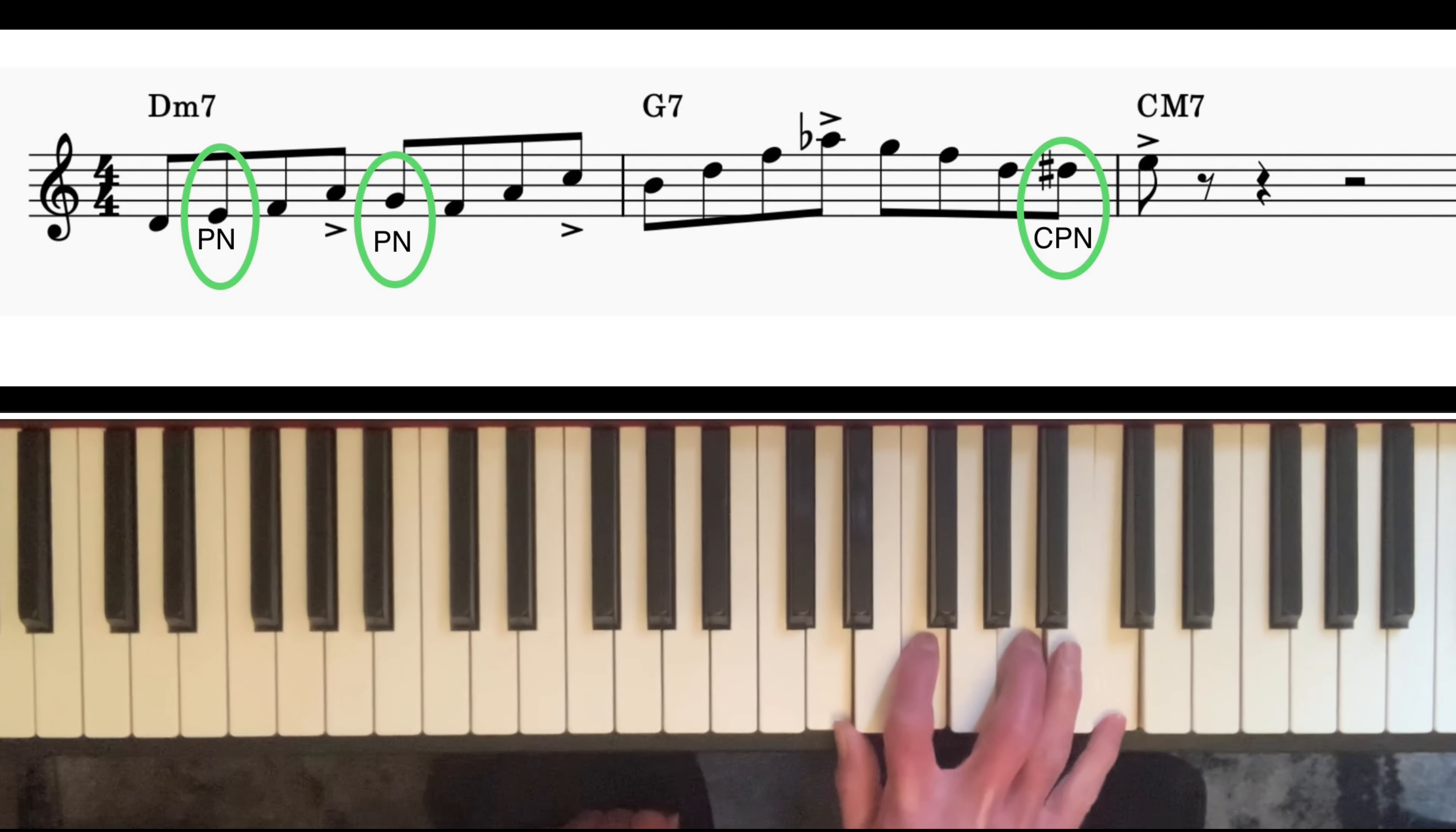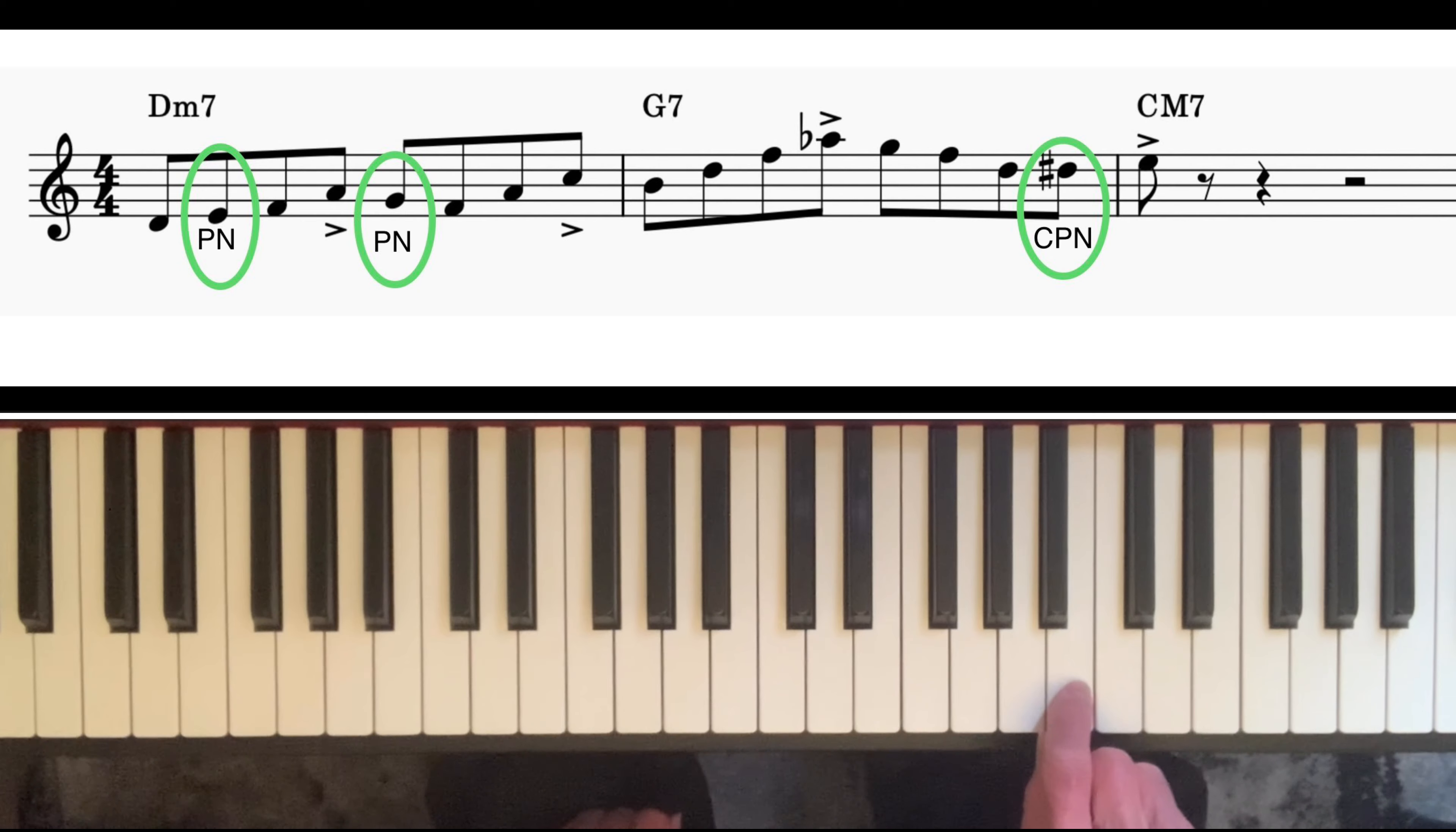...which leads very nicely to the third of G seven. Now this is something that you'll find an awful lot. When you're doing a chord progression where the root goes down a fifth to the next chord, it's always good when you finish the first chord on the seventh and lead to the third of the next chord.